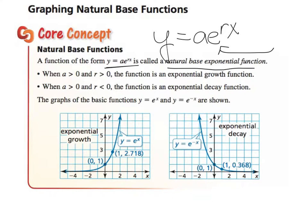Now, when a is greater than 0 and r is greater than 0, the function is exponential growth. When a is greater than 0 and r is less than 0, it's exponential decay. So y = e^x is exponential growth, and y = e^(-x) is exponential decay.